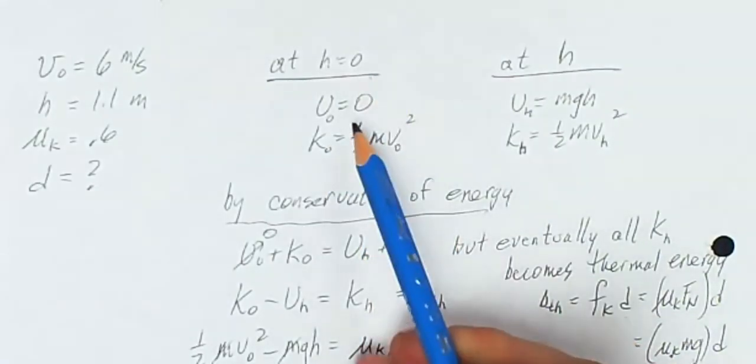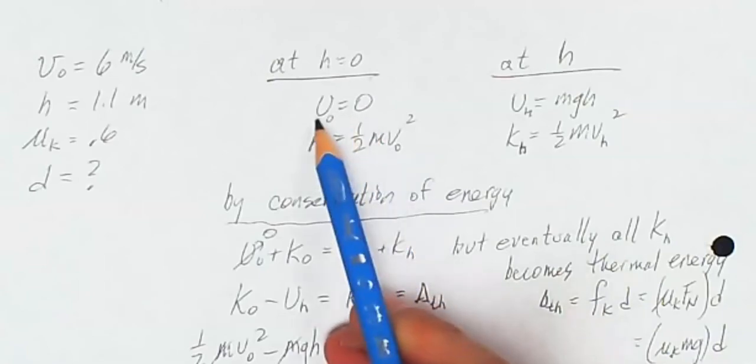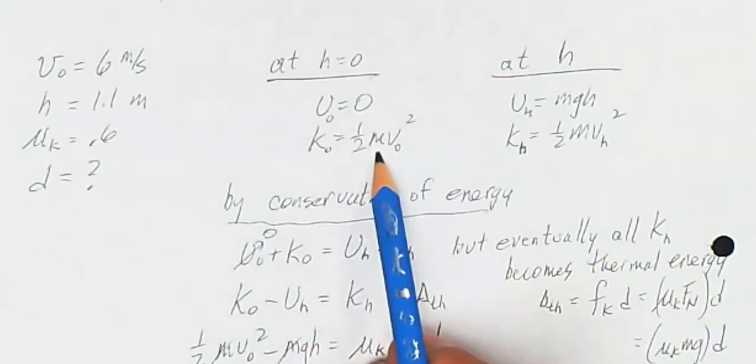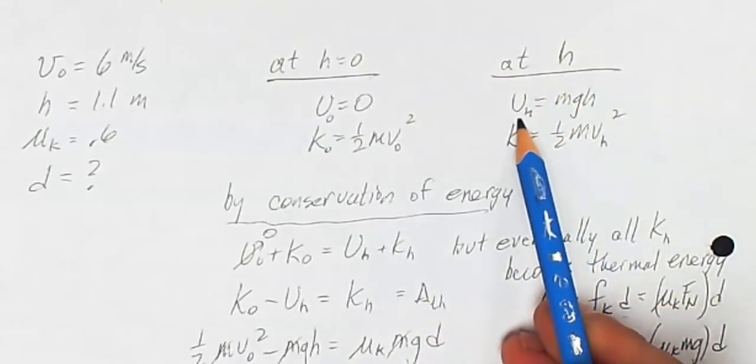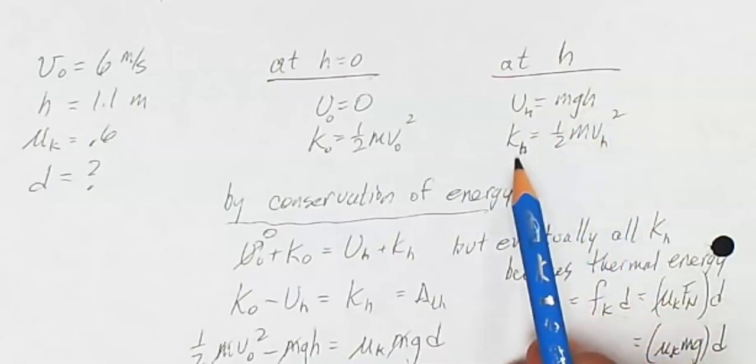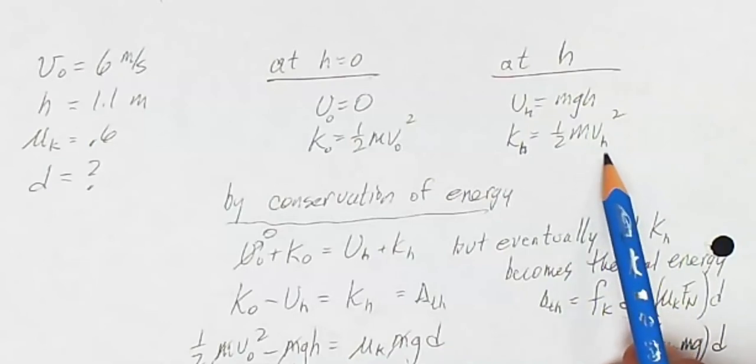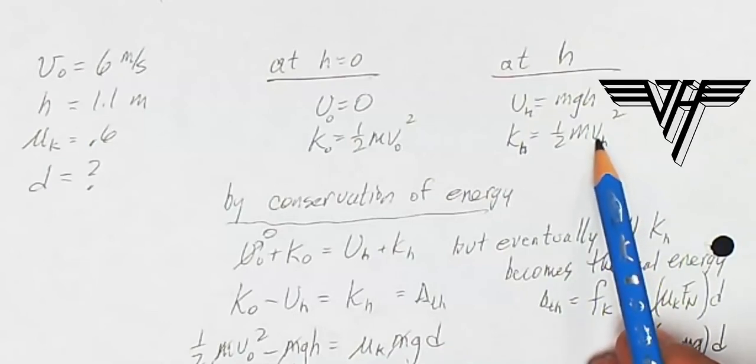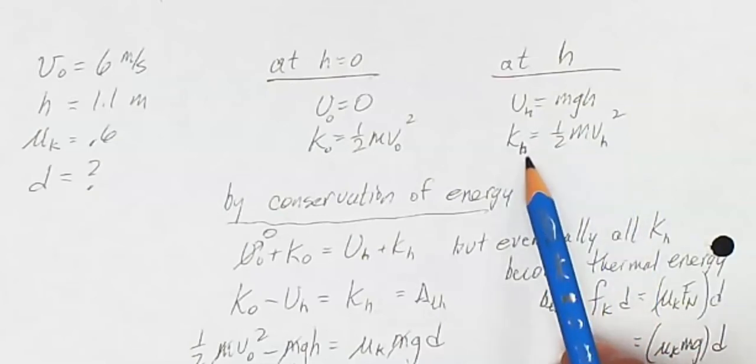At h equals 0, like I said, because that's my h equals 0 level, there is no gravitational potential energy. All of the energy is kinetic. And then when I get to the top level, I will have some potential energy, gravitational potential energy, associated with that height. And I'll have a new kinetic energy, which will have a new velocity. I am labeling that vh for the velocity at level h and the kinetic energy at level h.